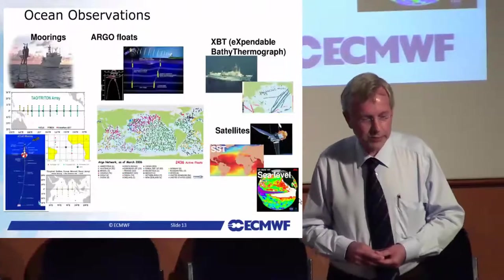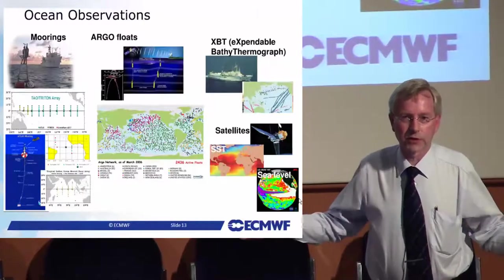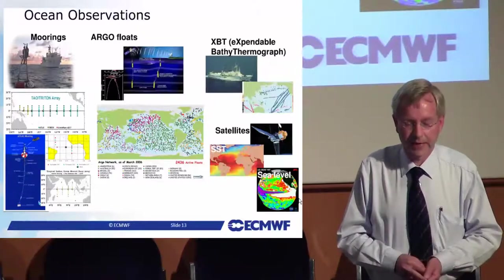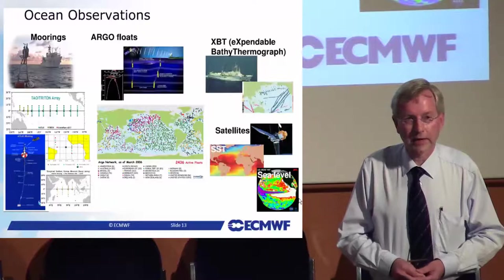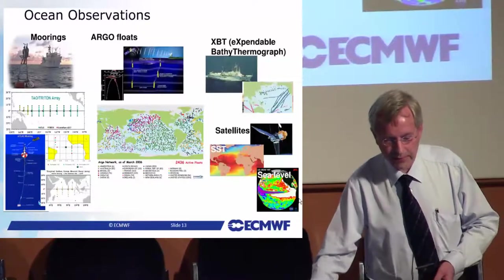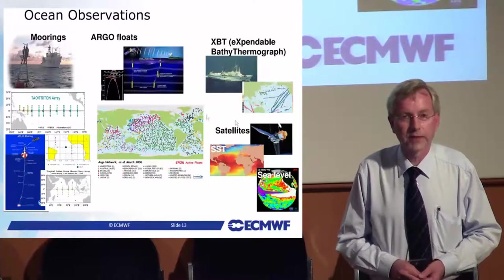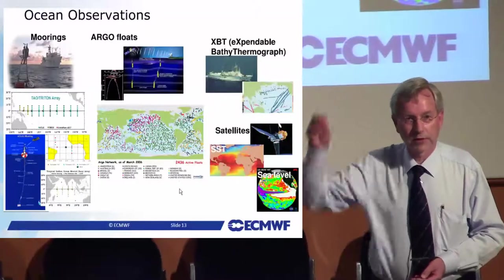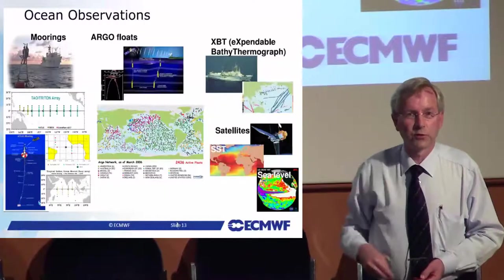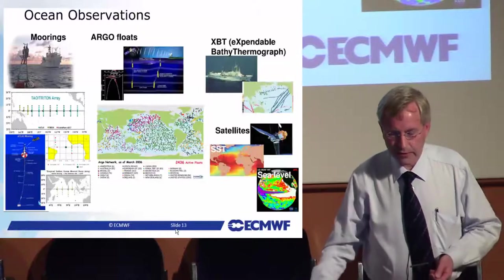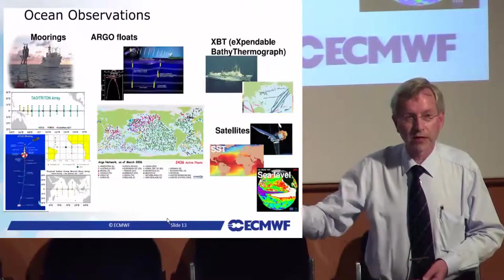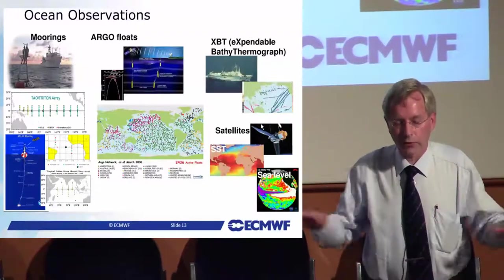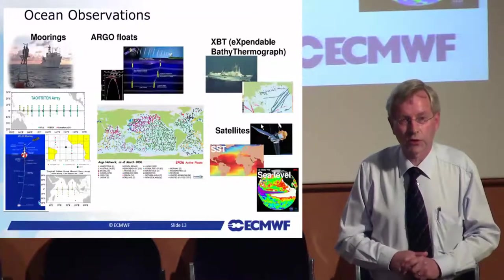The ocean observations are very different from atmospheric ones. Over the past 10–15 years, an observing system called Argo Floats has been installed — there are now a couple of thousands of these in the oceans. The map here shows their current coverage. These are analogous to radiosondes in the atmosphere, but they go down instead of up, actually moving up and down like a yo-yo to measure the ocean state. In addition, there are moored ocean-observing systems, expendable bathythermographs thrown from ships, and satellite information about the upper ocean surface — giving ocean color, wave state, and more.